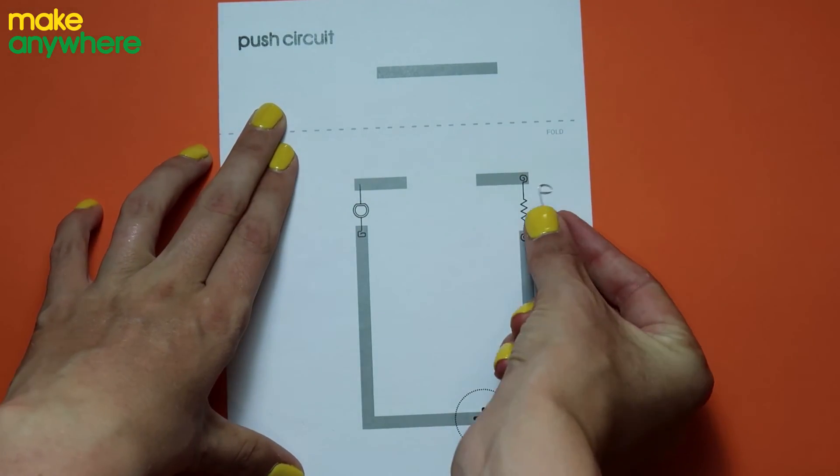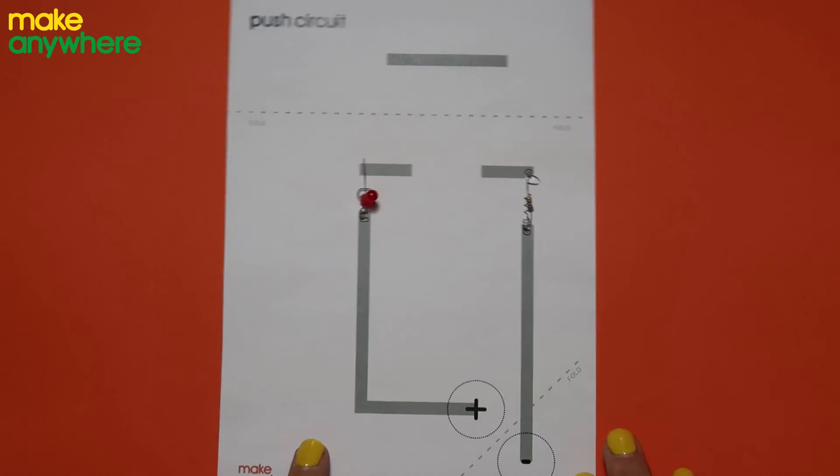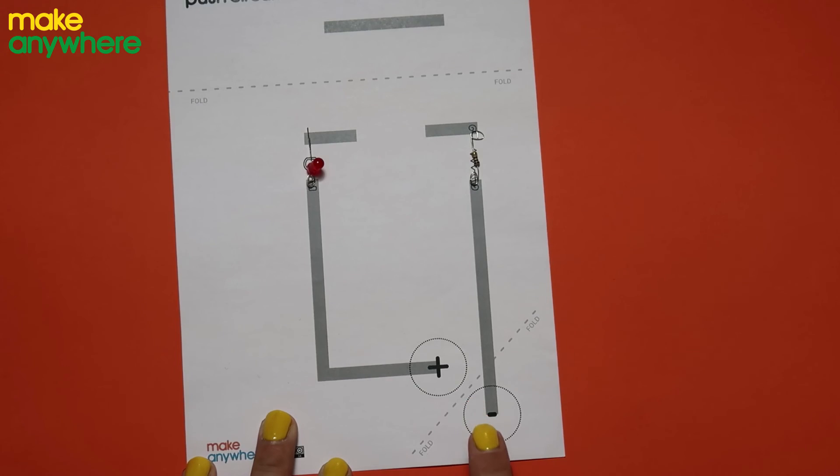So your resistor will be going here and your LED will go here. Great so we're going to start our copper tape now and we're going to start in the middle of the negative circle down the bottom here.